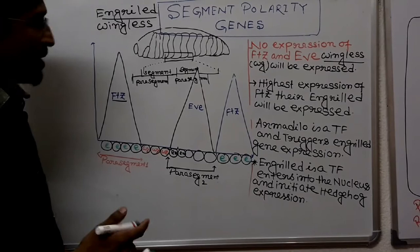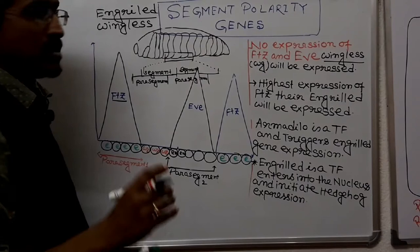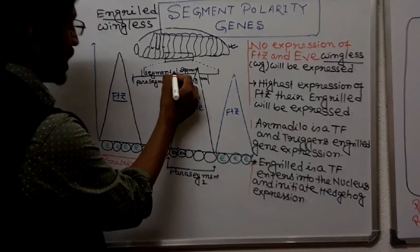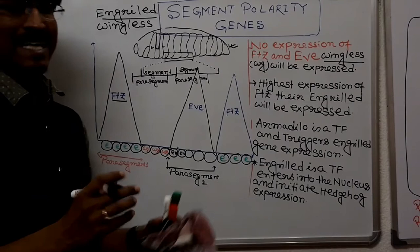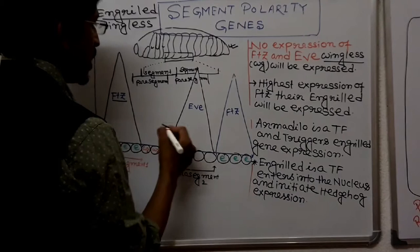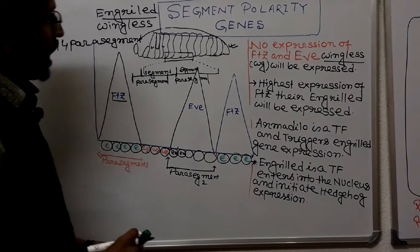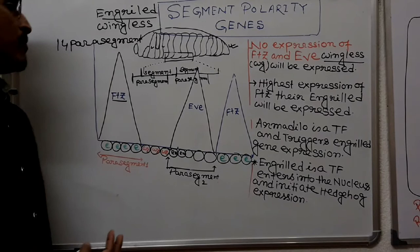Looking at the Drosophila body segments during the embryonic stage, the Drosophila embryo contains different segments. From one segment to half of another segment is the para segment. The Drosophila embryo contains 14 para segments — so there are 14 para segments in total.